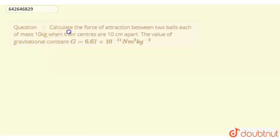Hello everyone, so we're going to calculate the force of attraction between two balls, each of mass 10 kg, when the centers are at a distance apart. The value of the gravitational constant is 6.67 × 10^-11 newton meter square per kg square.